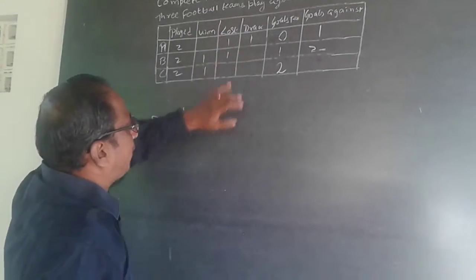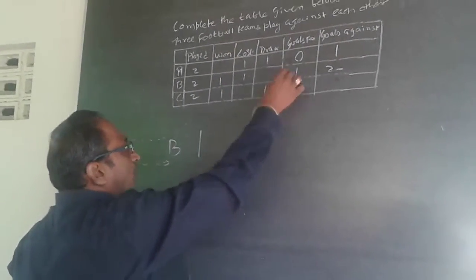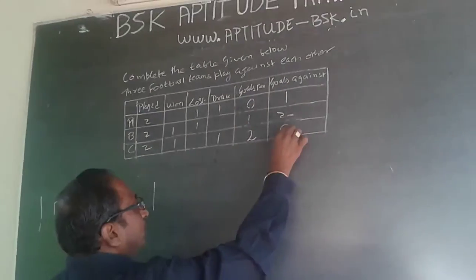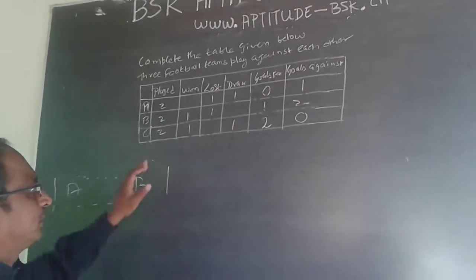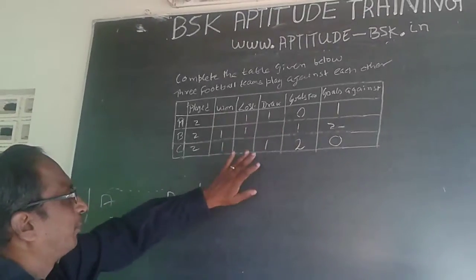A has played two games. One A has lost to B, the other is draw. This can only be against C, so A would not have scored any goal. This will be zero.